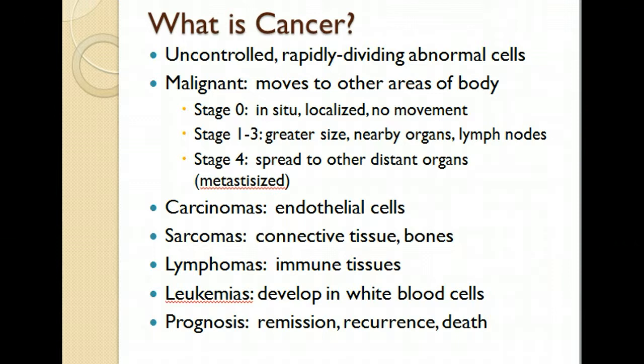Stage 4 is where the cancer has spread to other distant organs — it's called metastasized. For example, with breast cancer that has metastasized, there will be breast cancer cells in other organs such as the liver, bones, or brain. It's that specific type of cancer cell that moves to other places of the body. There are many different kinds of cancer, which is why it's so difficult to find a cure.